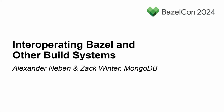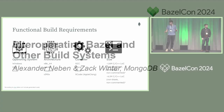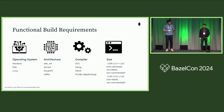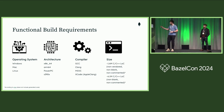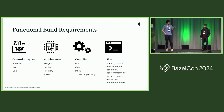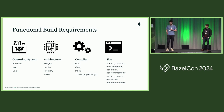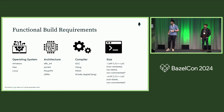Similar to the talk before us, we have two sets of requirements for building: functional and non-functional. For functional, we have to support a lot of different architectures and operating systems. We have to support Windows, Mac, Linux. For architectures, we have to support x86, ARM, PowerPC, and S390X.